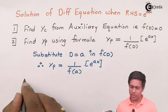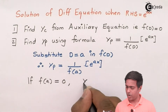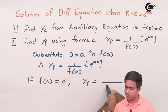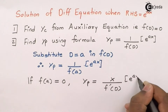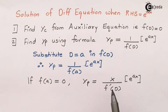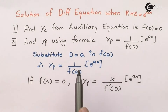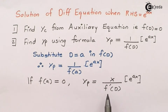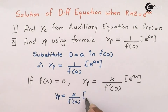If f(a) = 0, then yp is found using the derivative: yp = x · e^(ax) / f'(D), evaluated with D = a. Notice that in the numerator we add the term x, which was not there previously. Then we substitute D equal to a in f'(D) to get f'(a). Therefore, the solution in this case is yp = x · e^(ax) / f'(a).